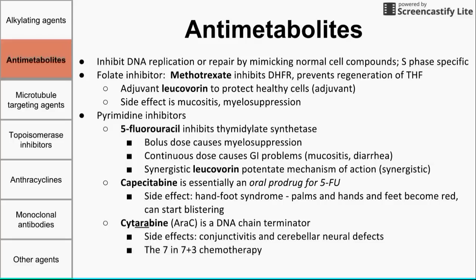It's worth mentioning that cytarabine is used in the 7+3 chemotherapy regimen — a 10-day regimen common in practice. For the first seven days, you administer cytarabine, followed by three days of anthracyclines. There is also one other class of antimetabolites called the purine analogs, and the one important to know is 6-mercaptopurine. So we have three classes of antimetabolites: folate inhibitors, pyrimidine inhibitors, and purine analogs.